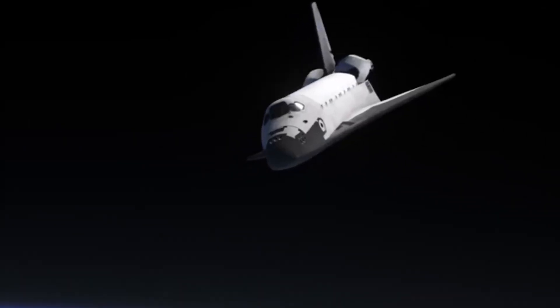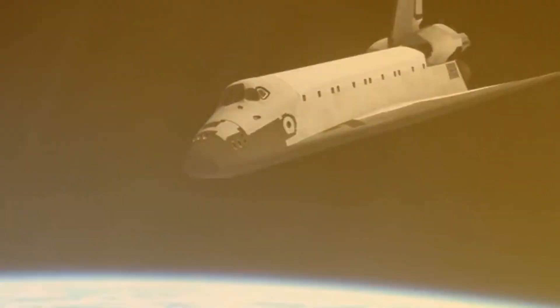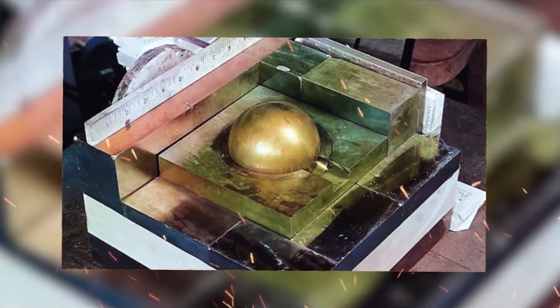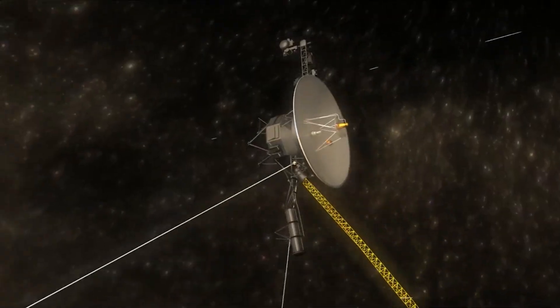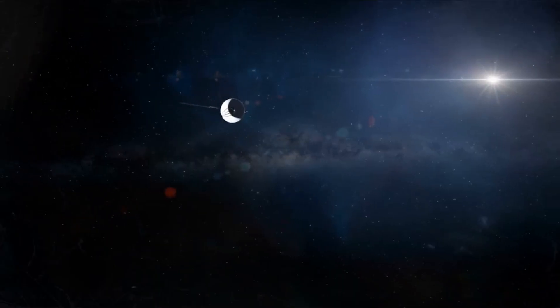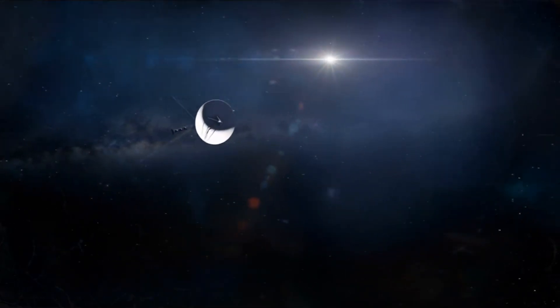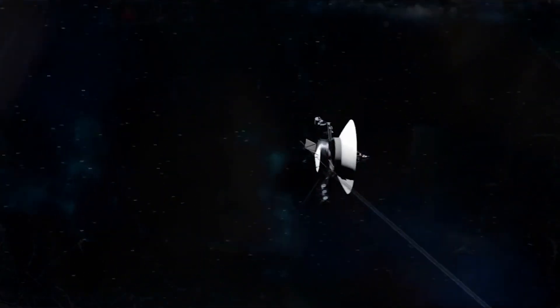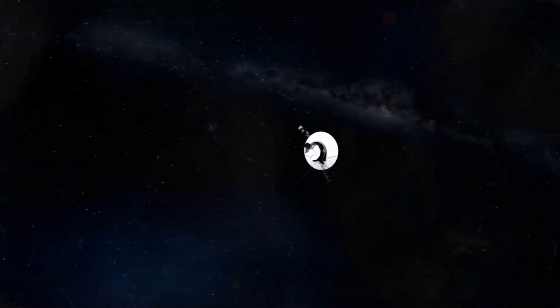Yet, the end is inevitable. Voyager 1, the most distant human creation in existence, is slowly approaching its twilight. By the year 2036, its nuclear heart, the plutonium that has powered its voyage since 1977, will no longer generate enough energy to keep even its faintest signal alive. One by one, its instruments will have gone dark, its transmitters silenced, until at last there will be nothing left but silence.